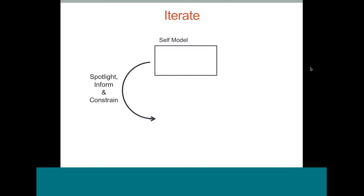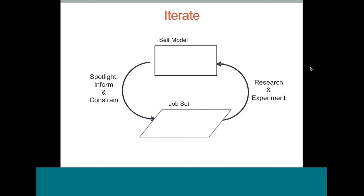In summary for this process: we start top down, construct a model of ourselves, that model spotlights jobs to consider, then we do research and conduct experiments, and we keep iterating. In each iteration, self-knowledge becomes increasingly refined — the self-model gets bigger and more refined, and that self-knowledge helps filter and narrow down the job hypothesis set. The set should get smaller for the most part. And you can also create jobs in the set — like career tech entrepreneur was something I created. You can definitely create your own career and put it into that set.